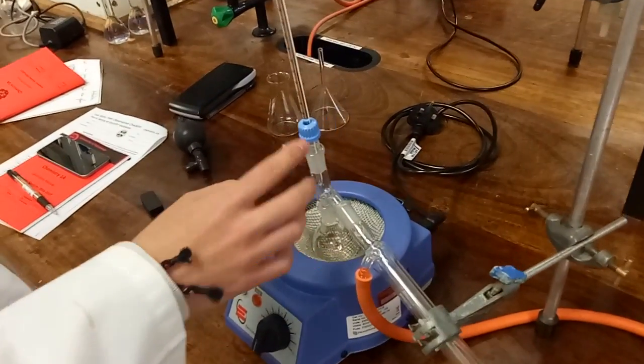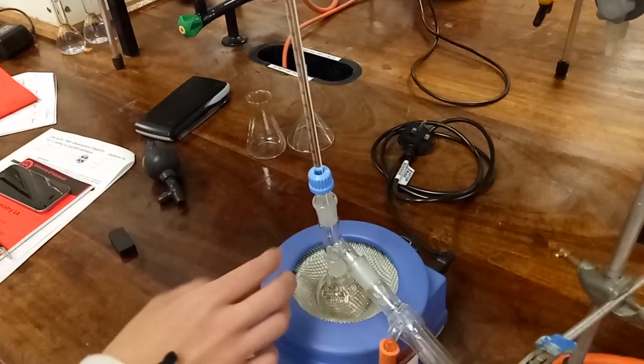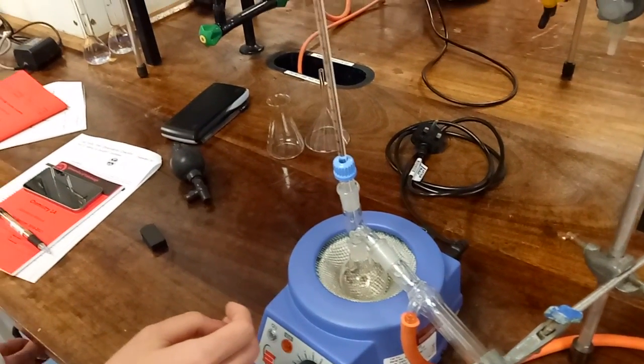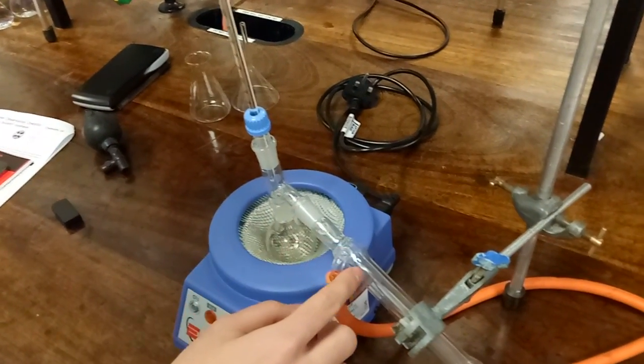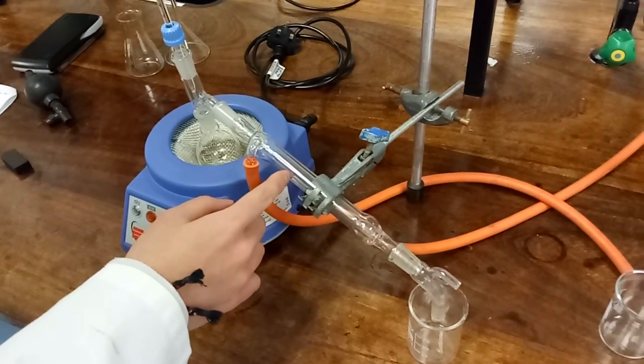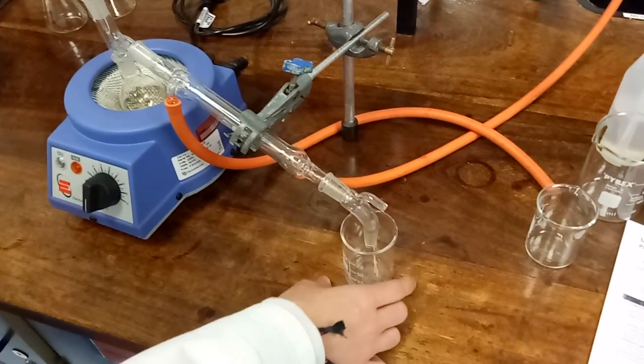Once we see that the temperature has reached a steady point and isn't rising anymore, that means the first fraction has reached its boiling point. At which point, the gas comes through the condenser. The lower temperature in the condenser means the gas will condense into liquid, which we collect in this flask.